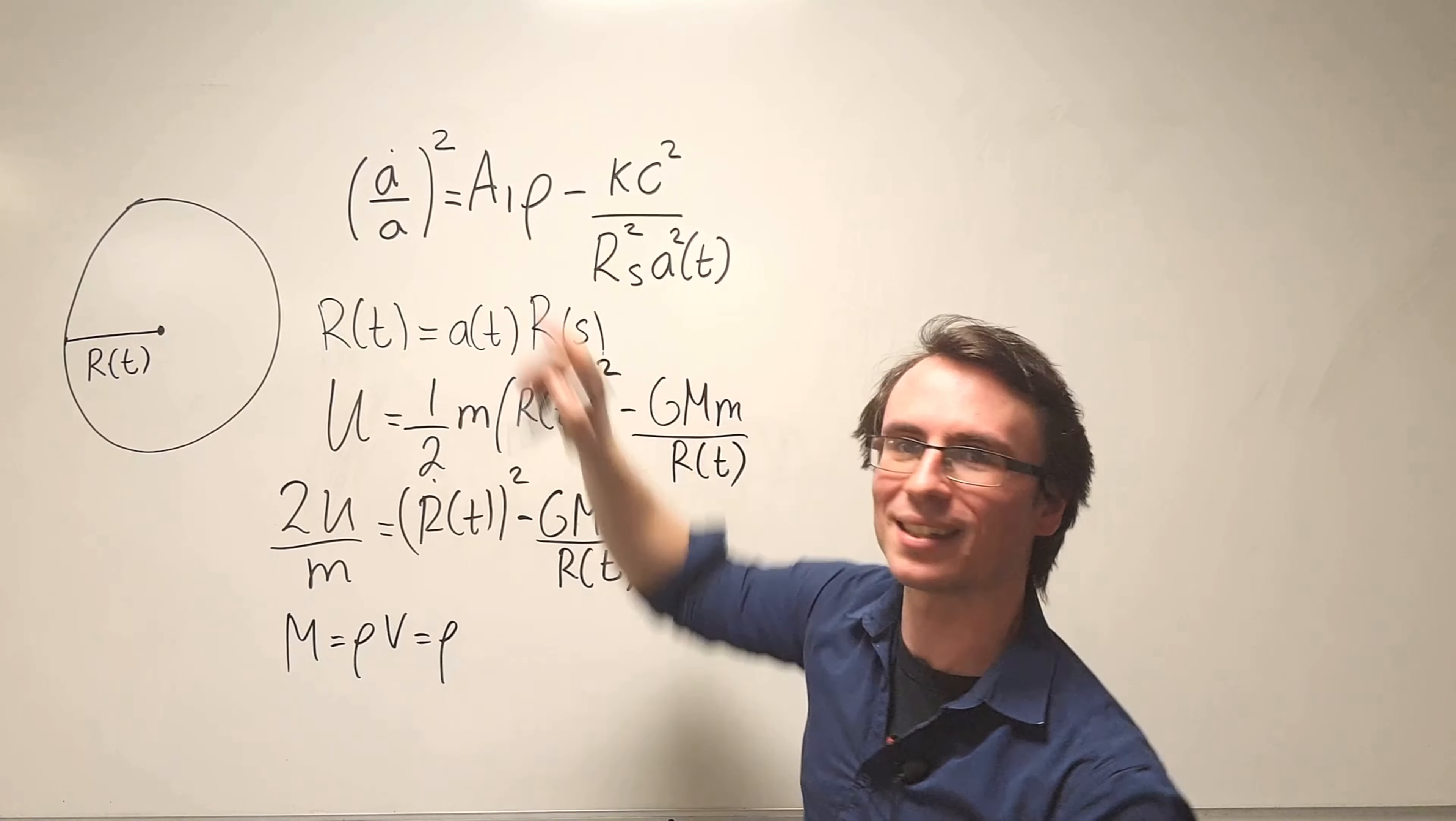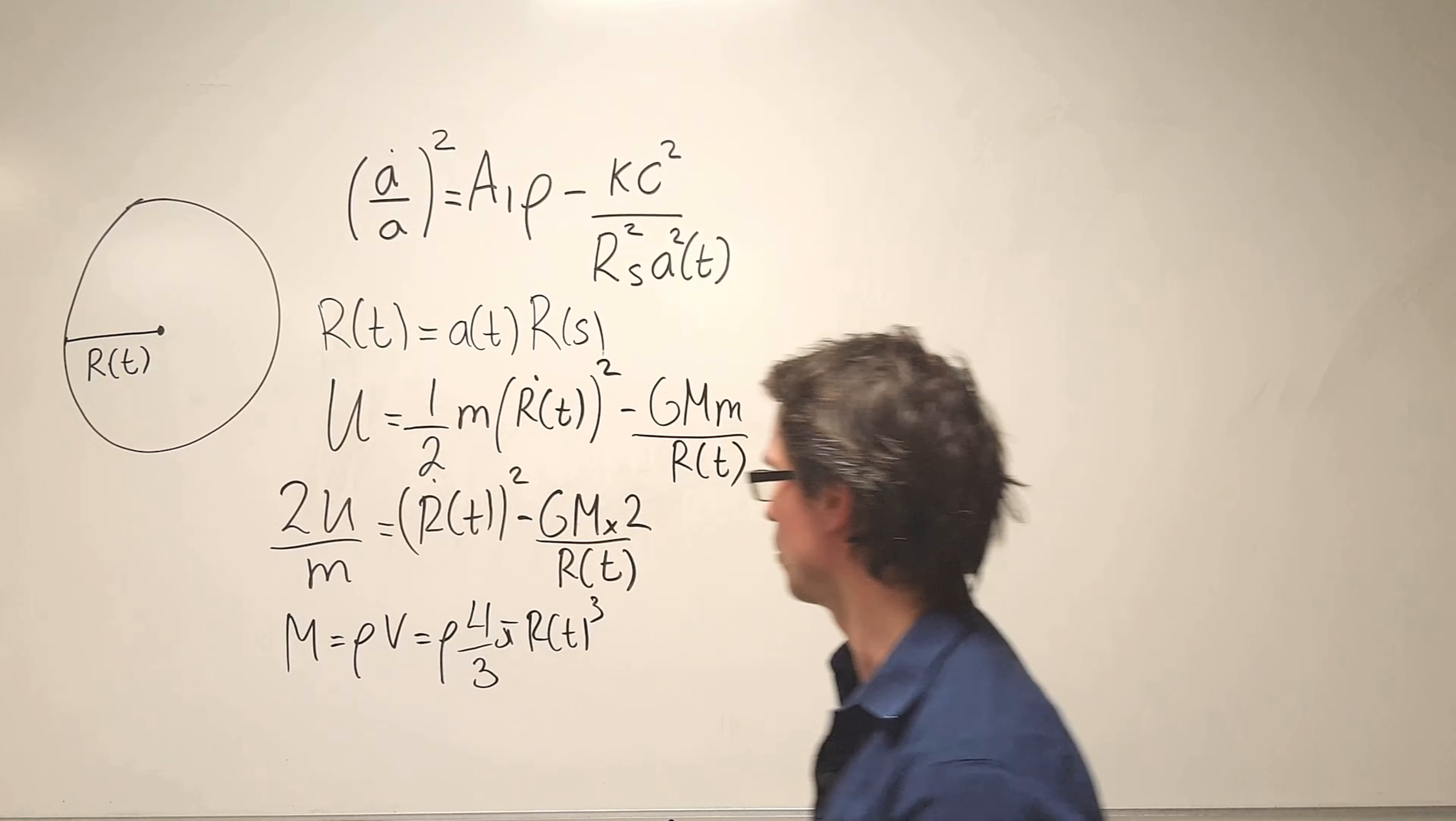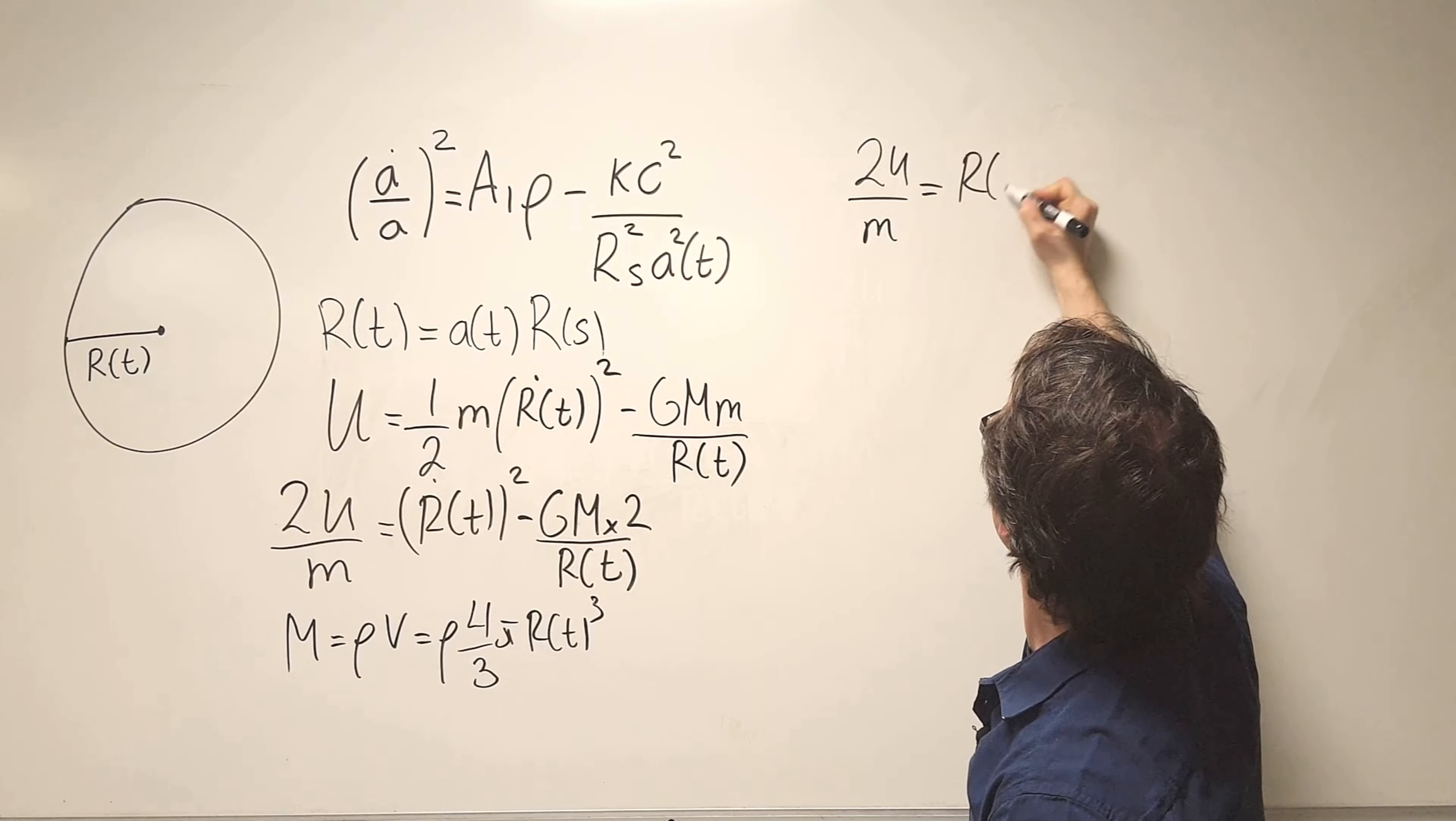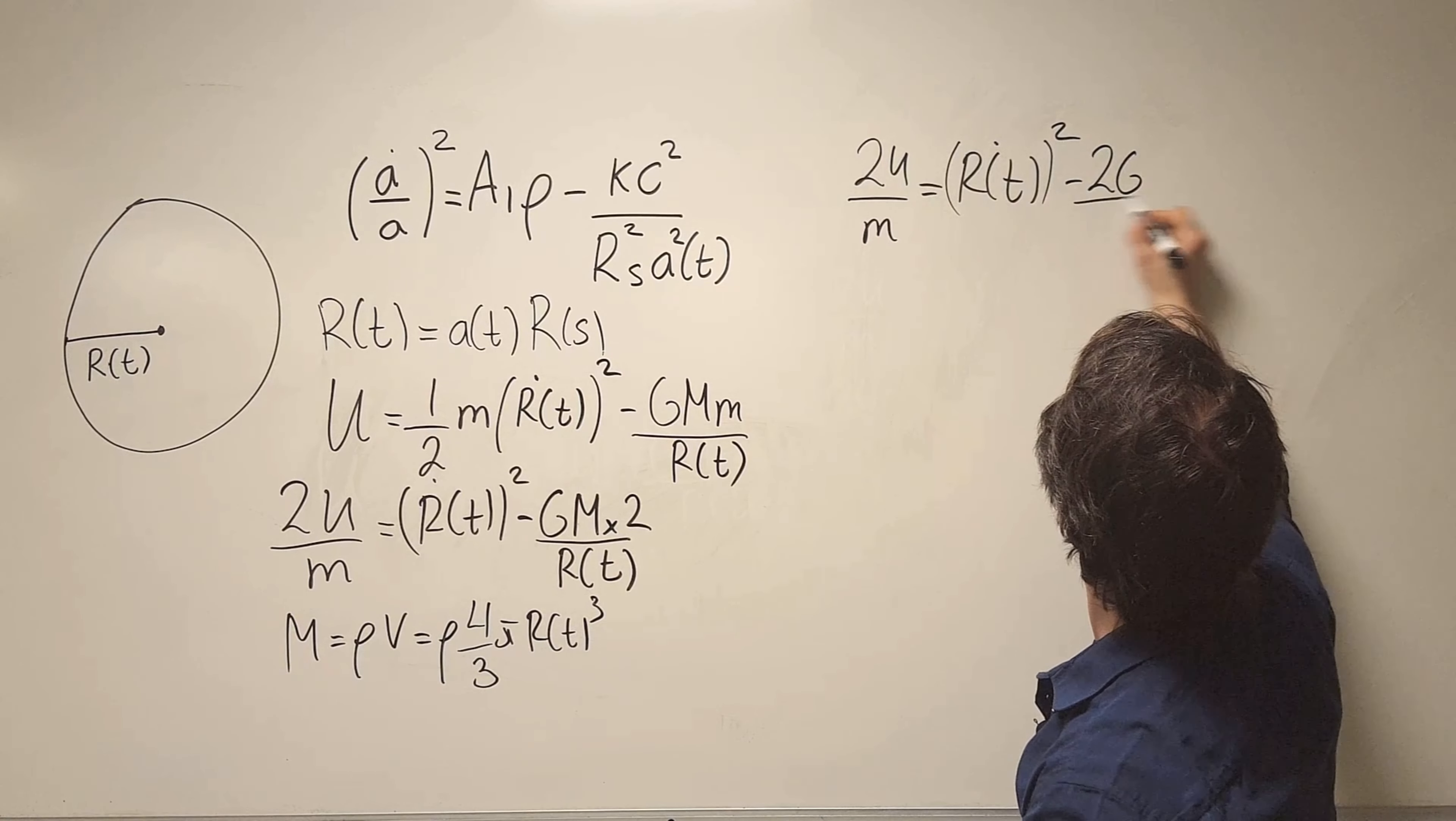Remember mass is equal to density times volume, and also the density is in this original expression. So I can just multiply that by the volume of a sphere which is four thirds pi r cubed. Now let's plug this in and the expression that we're going to get is that 2U over m is equal to R as a function of t dot squared.